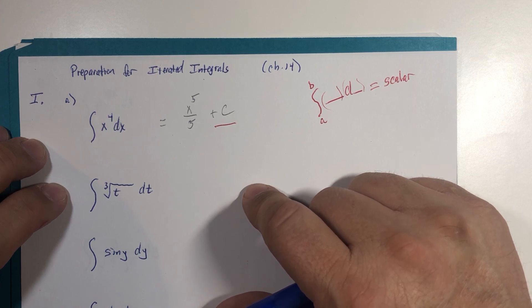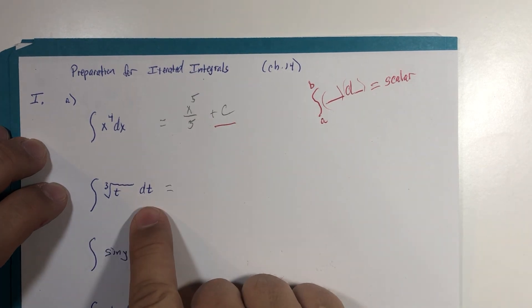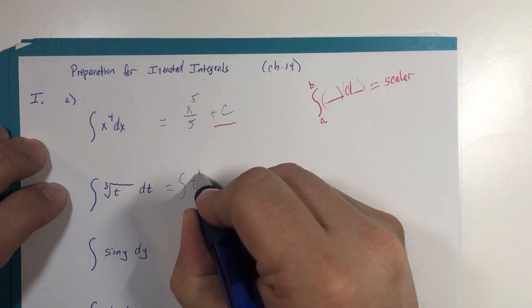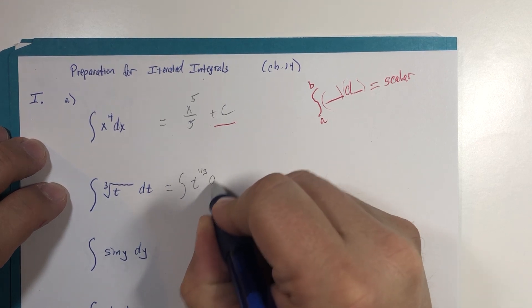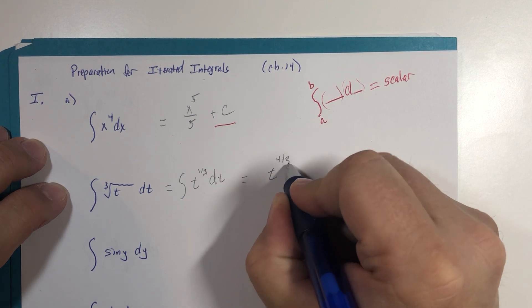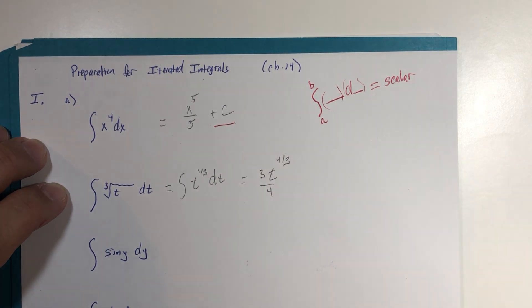All right, t is the variable and we can use the power rule. This is t to the one-third power and we will get t to the four-thirds power divided by four-thirds or multiplied by three-fourths and again a constant.